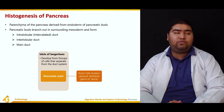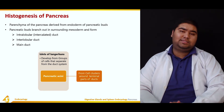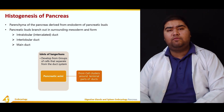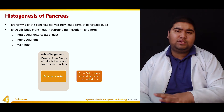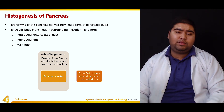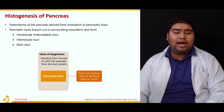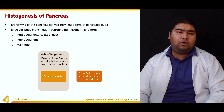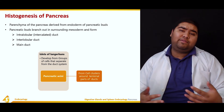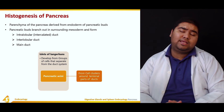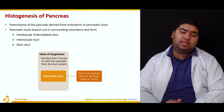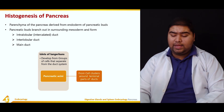The islets of Langerhans develop from groups of cells that separate from the ductal system. When the ductal system is being formed, some cells separate from it and form the islets of Langerhans, which have important endocrine functions within the pancreas.